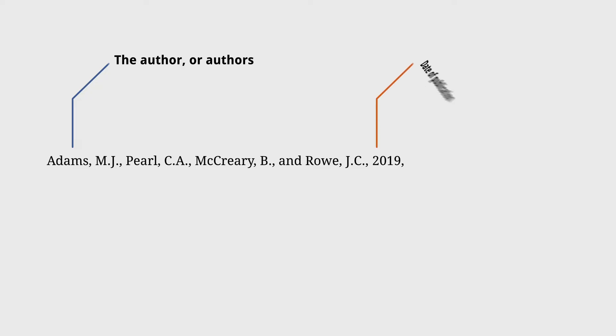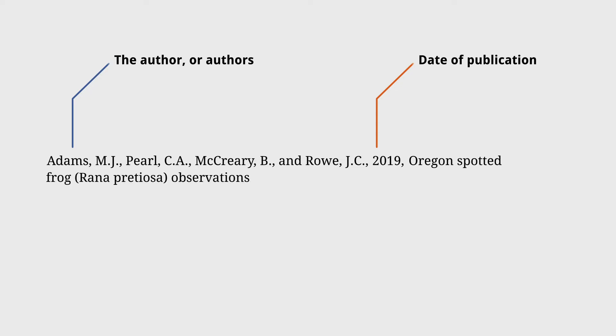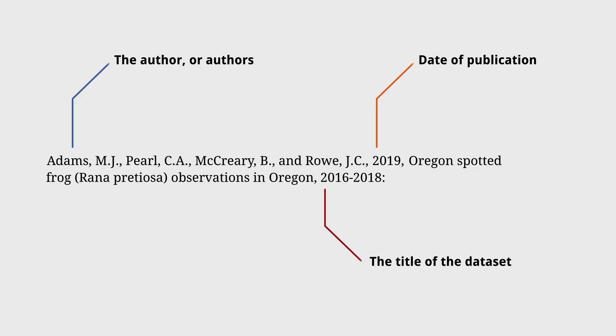At a minimum, this should include: the author or authors who created the data set — you should name any individuals or organisations responsible for its creation; data publication — this should be the year the data set was first published or disseminated; and the title of the data set, which should include any edition or version numbers that identify the specific version you used.